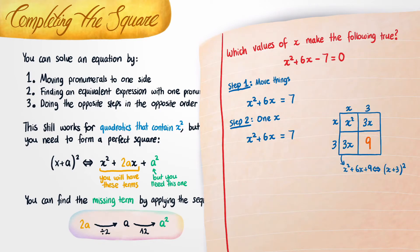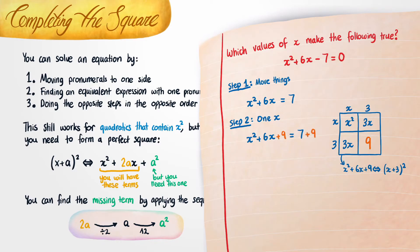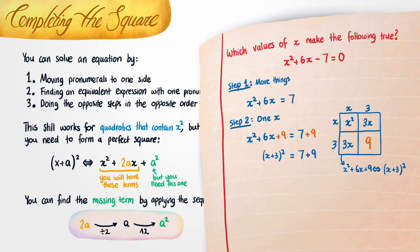Just to remind you, this equivalence symbol means the left and the right are interchangeable. Looking at this expression, the only thing we're missing on the left-hand side is this 9. So what we're going to do is add 9 to both sides of this equation. Then we can replace x squared plus 6x plus 9 with (x + 3) all squared. We can also see that 7 plus 9 is the same thing as 16, so we replace that as well.